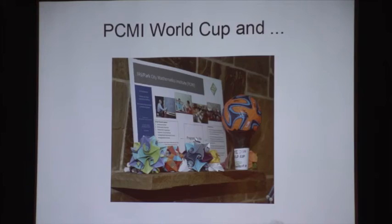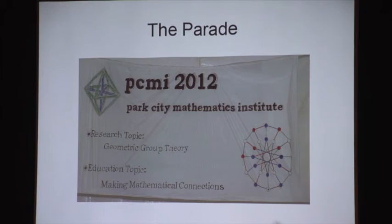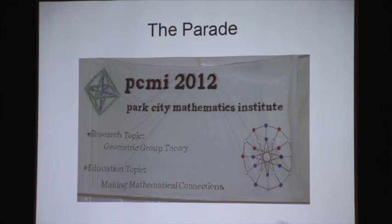Park City has a 4th of July parade with approximately 80 entries; the route is about a mile long. PCMI always has an entry and we often win a prize — everything from the top non-profit award to specially created awards like 'most mathematical' or 'most stimulating.' In 2012, as we went past the review stand, they announced our entry as 'geometric group therapy.'